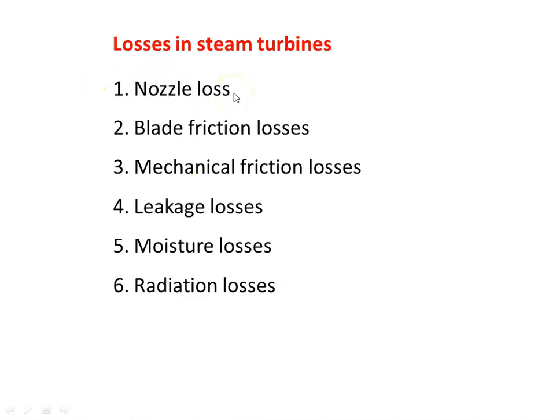The first type of loss is the nozzle loss. In any steam turbine, at the entrance there is a set of nozzles. The main purpose of the nozzle is to convert the enthalpy of the steam into velocity, so the pressure decreases across the nozzle and velocity increases. The main loss in the nozzle is the frictional loss. The effect of this frictional loss is reducing the velocity of the steam at the outlet of the nozzle, due to friction between the steam and the surface of the nozzle.